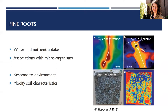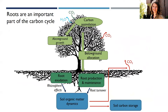The biological, physical, and chemical characteristics around the roots in the soil are very different from the rest of the soil, and one of the reasons for this is root exudation — the process by which roots release chemicals into the soil. I will talk more about this in a bit.